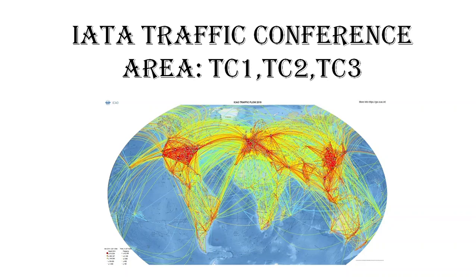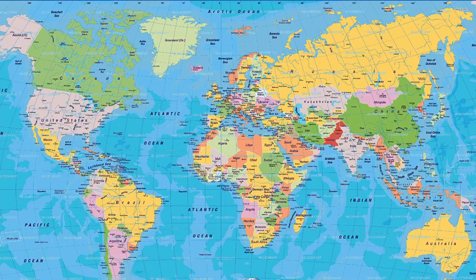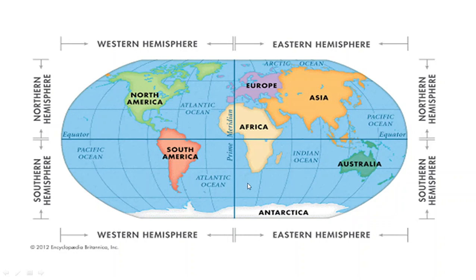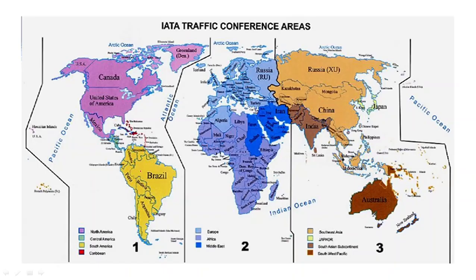Welcome. In this video, let's talk about IATA Traffic Conference Areas: TC1, TC2, and TC3. Like in geography we have different hemispheres - the equator making northern and southern hemisphere, and the prime meridian dividing eastern and western hemisphere - in aviation geography we also have eastern and western hemispheres. These are not divided by the prime meridian; we have IATA Traffic Conference Areas. TC1 is the western hemisphere, and TC2 and TC3 together make the eastern hemisphere.